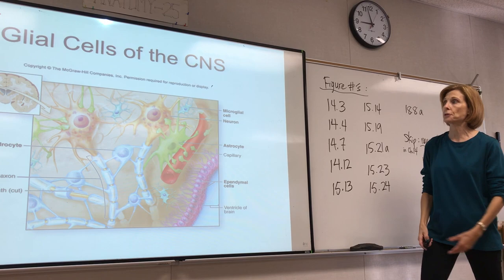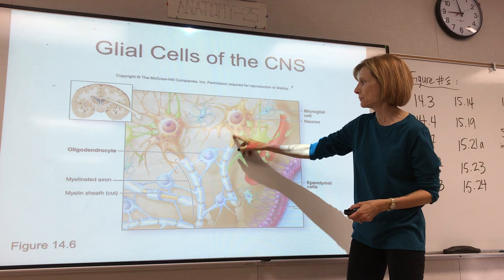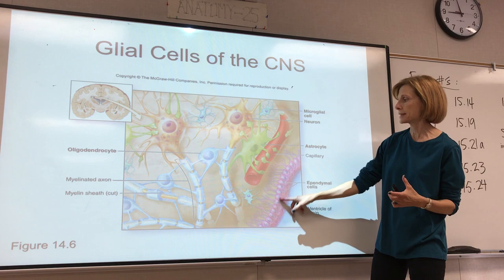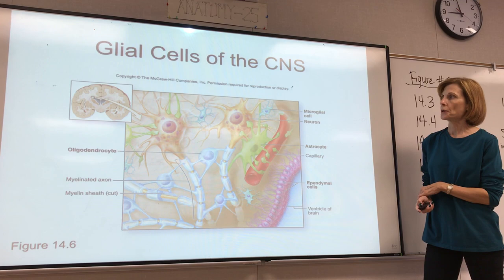This is a diagram showing a cut through the brain, kind of blown up. You can see a couple of neurons here. Notice that these are multipolar neurons. And now notice all these other cells around them — these are all different types of neuroglial cells.